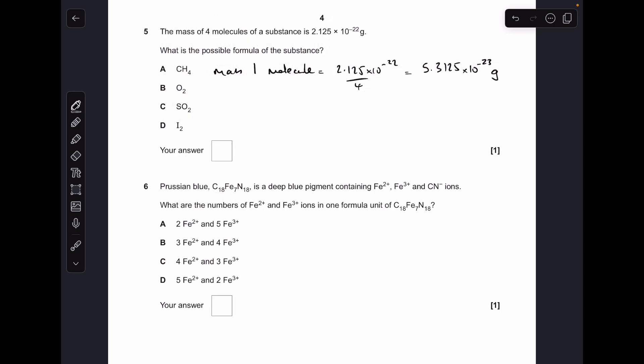Moving on to number 5. We've got the mass of 4 molecules. If we divide that by 4 we get the mass of 1 molecule. Now we just multiply that by Avogadro's number, 6.02 × 10²³. You get 31.98 which is virtually 32. So it was O₂, option B.